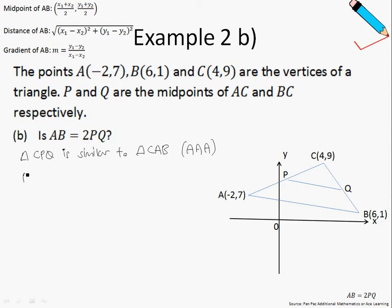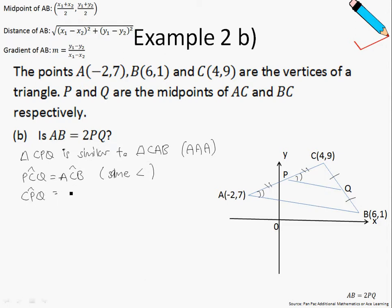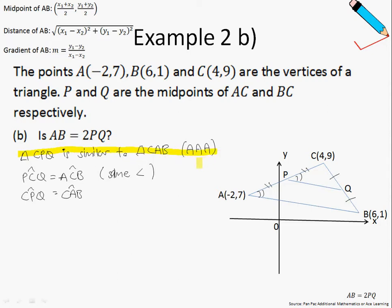You can see that angle PCQ is equal to angle ACB because of the same angle. Now, previously we were told that point P is the midpoint of line AC, and also point Q is the midpoint of line BC, so therefore we can say that angle CPQ is equal to angle CAB. Therefore, we have just proven that based on the angle-angle-angle property, these two triangles are similar.